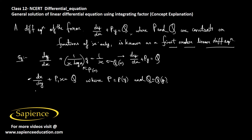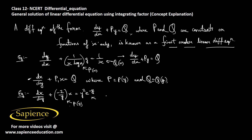An example of this type is: dx/dy + (-2/y)·x = y²·e^(−y). Here, P1 = -2/y is a function of y, and Q1 = y²·e^(−y) is also a function of y. So this is an example of the second kind of linear differential equation.